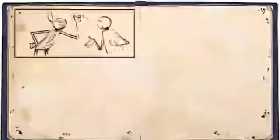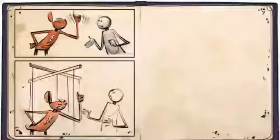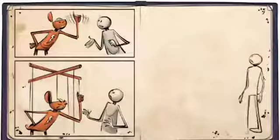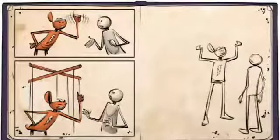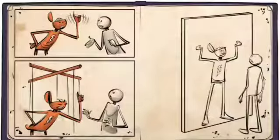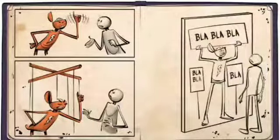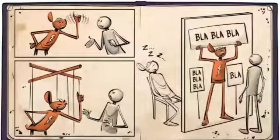The fact that the stupid person is often stubborn must not blind us from the fact that he is not independent. In conversation with him, one virtually feels that one is dealing not at all with him as a person, but with slogans, catchwords and the like, that have taken possession of him.